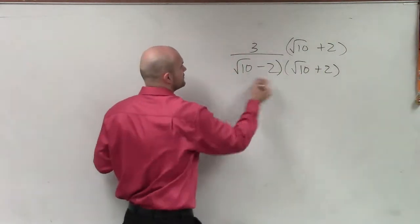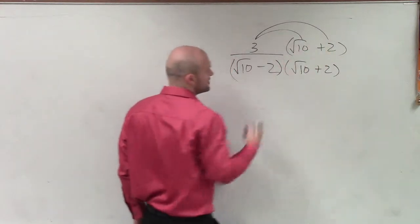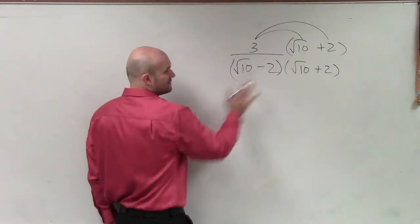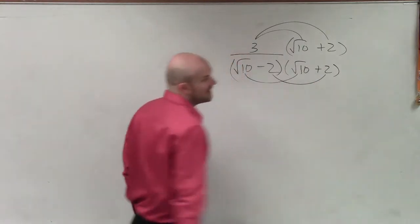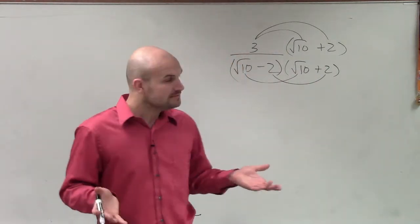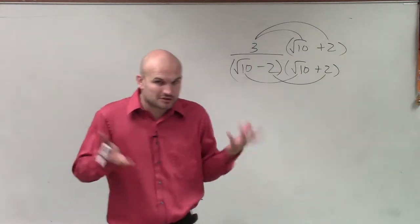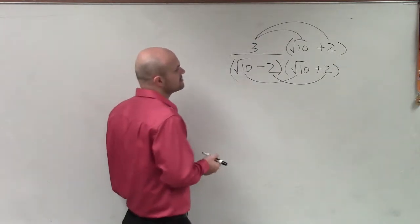All right, so now to kind of make things go through a little bit quicker, we know that here we're going to have to apply the distributive property. And here is the difference of two squares, so I only need to multiply the first and the last. If you want to do inner and outer, that's perfectly fine, but you'll notice the inner and the outer terms just add up to 0.